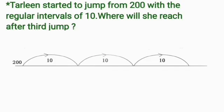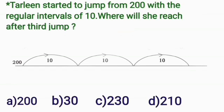Next question. Tarleen started to jump from 200 with the regular intervals of 10. Where will she reach after third jump? Here we have the 4 options. So, let's start from 200. After the first jump, she will reach at 210.